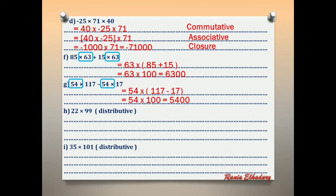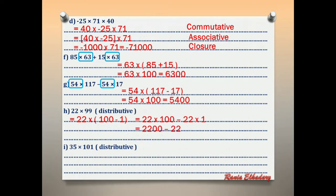Letter H: 22 × 100 − 22 × 1. Find 22 × 100 = 2,200 and 22 × 1 = 22. So 2,200 − 22 = 2,178.